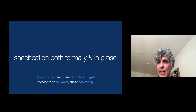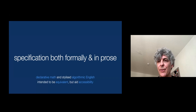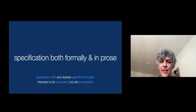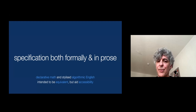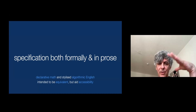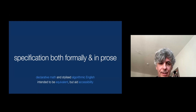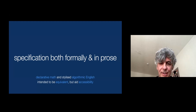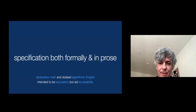Basically, it has both the declarative semantics and the algorithmic semantics in some stylized English, and they're intended to be equivalent. The whole point of having this English is to aid accessibility, because most programmers and even compiler folks are not particularly familiar with formal semantics. One hope is that having both next to each other can help improve understanding of formal semantics.